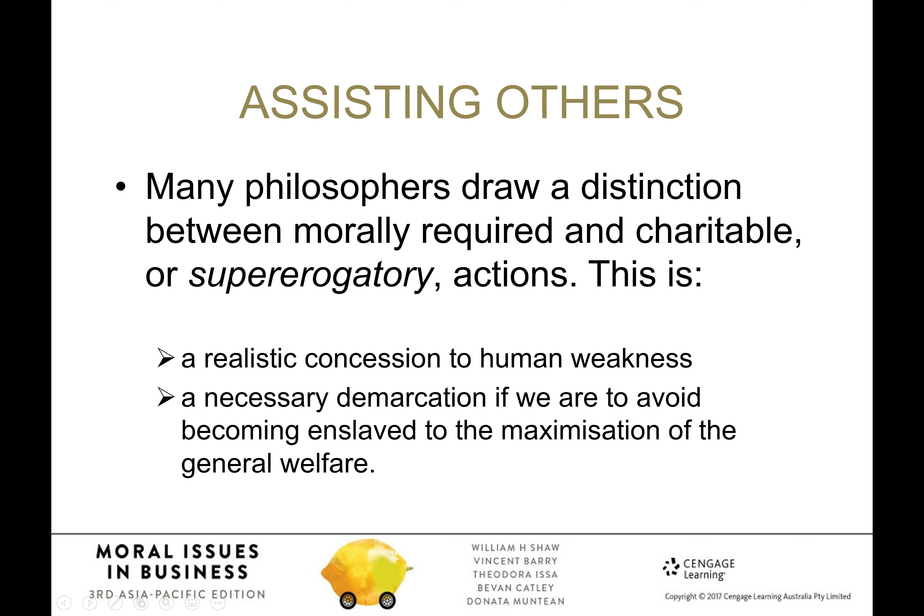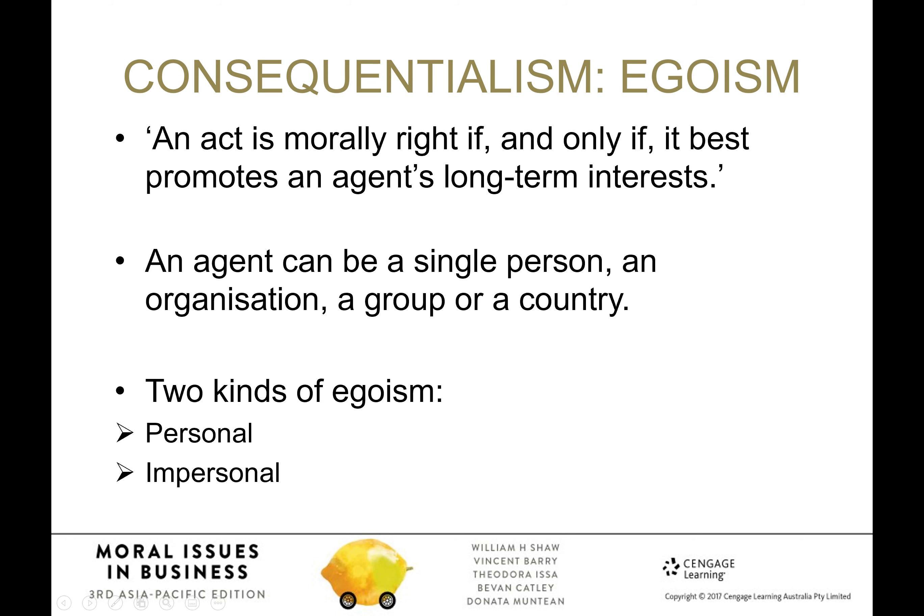Now, morally correct is a loaded term, because we're talking about different theories of morality and ethics. The first consequentialist theory is egoism. Egoism basically says that an act is morally right only if it promotes an agent's long-term interests — so only if it's of benefit to me, in the long term, is that a morally right thing to do.